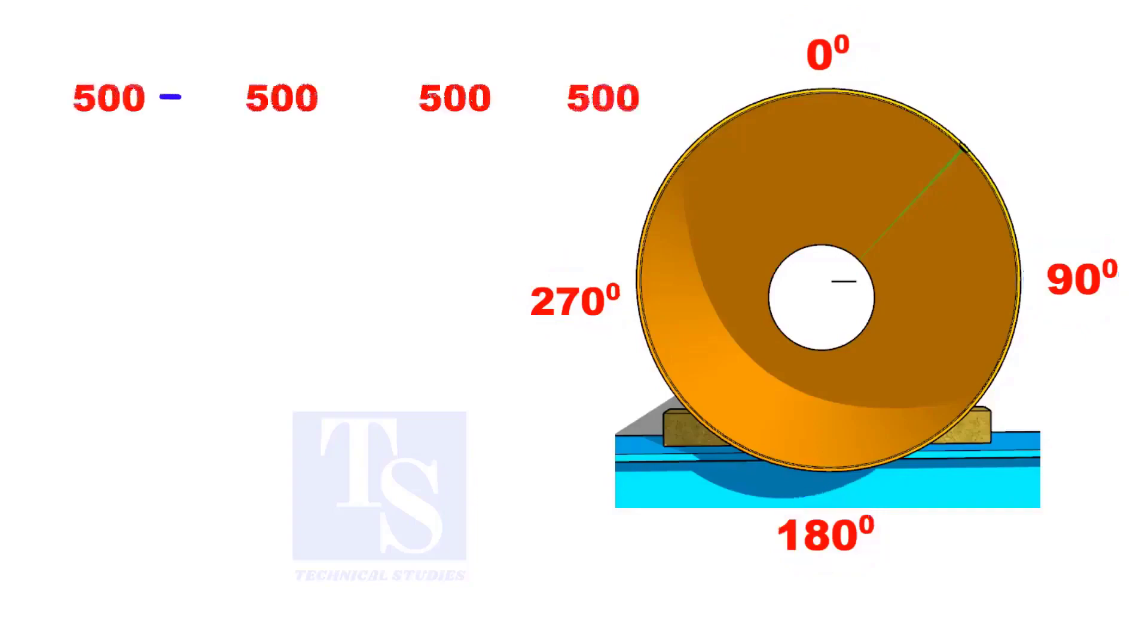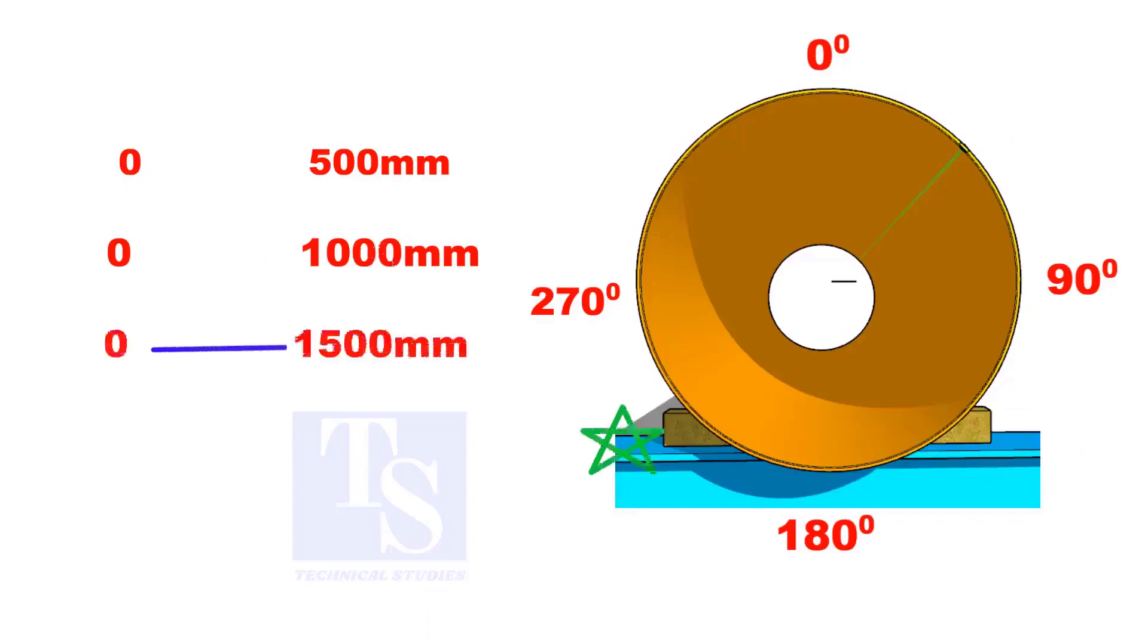Do not mark 500 mm each. Instead, use the progressive method. In progressive method, hold the 0 mm on the center line and mark 500 mm on the pipe. Then, 0 to 1000 and 0 to 1500 mm.